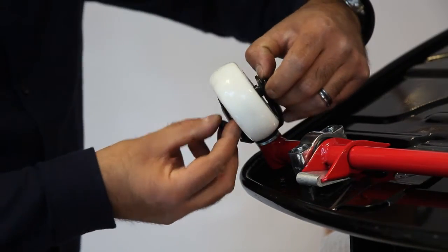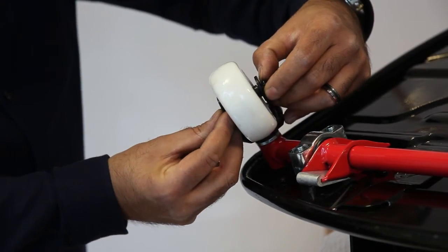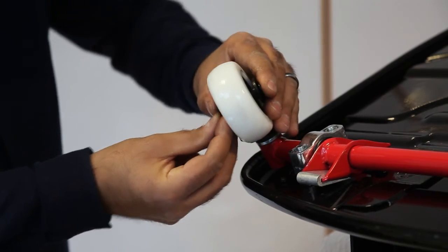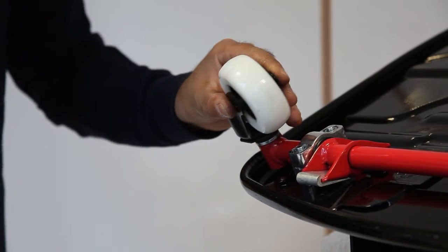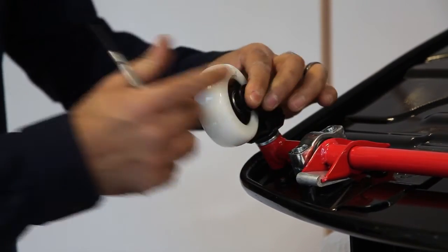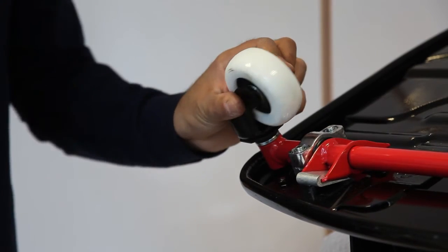Take the second spacer, pull the axle bolt back a bit, and slot the spacer through. Again, just use a small screwdriver to line it up for the axle bolt to be pushed all the way through.